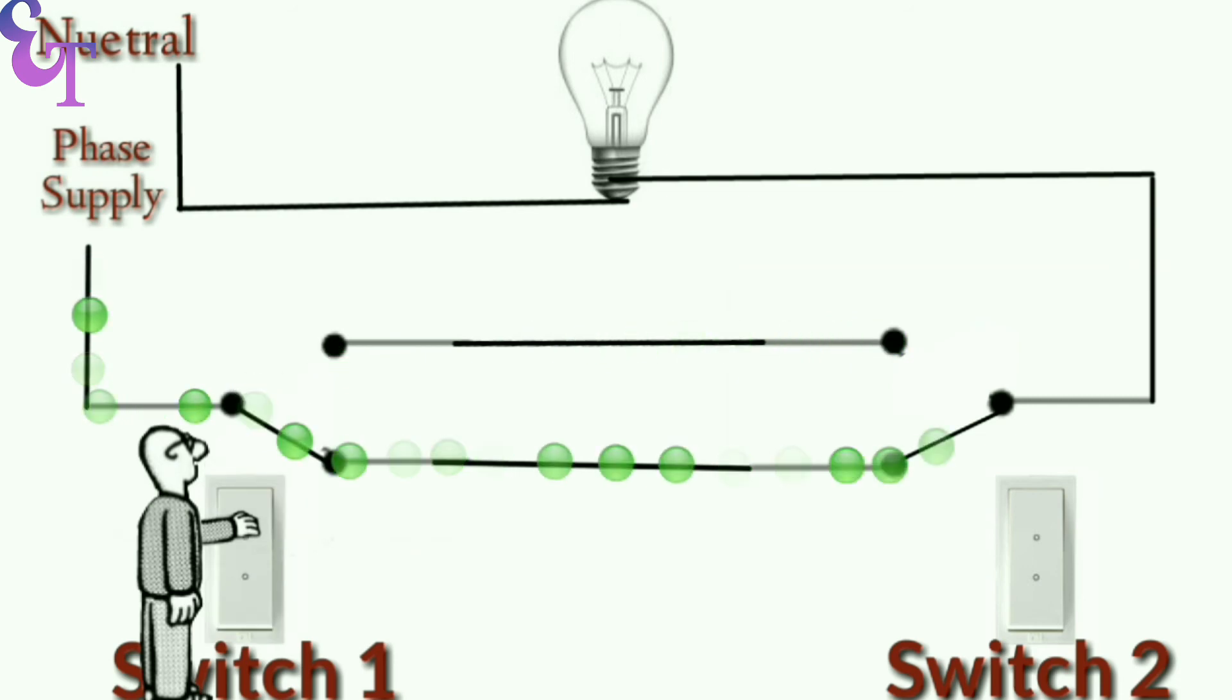Like this friends we can turn on and off the bulb from any place. If we use this circuit to operate the bulb, we can turn on and off the bulb from two places.